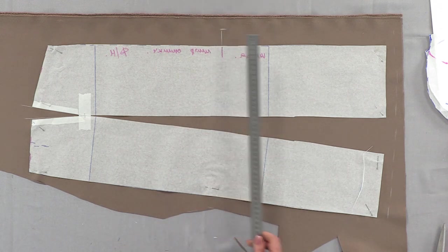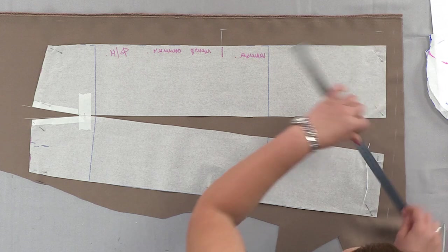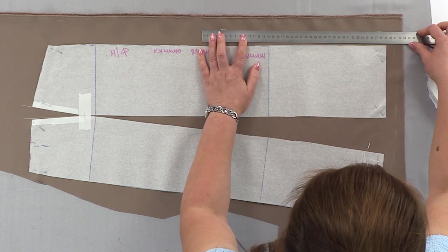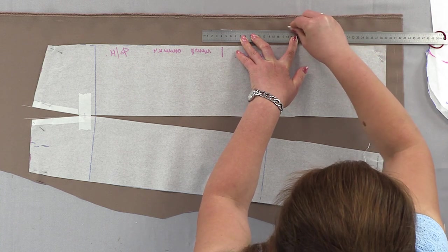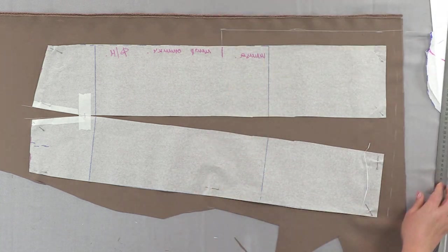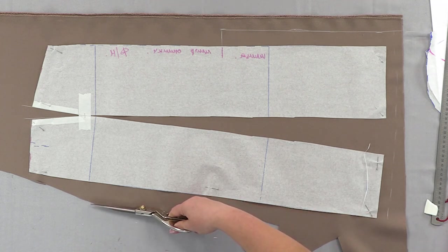Let's leave 3 centimeters for now. Even if it's not that deep, we can always cut it down. We'll draw the slit right away. Let's start the cutting.